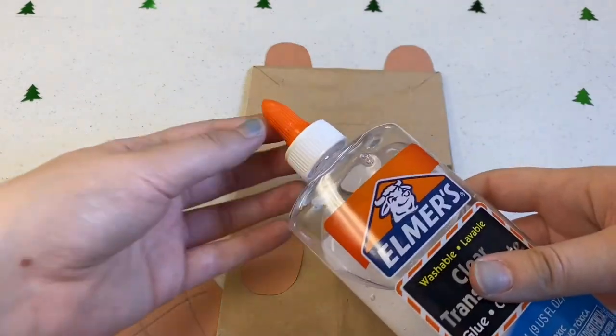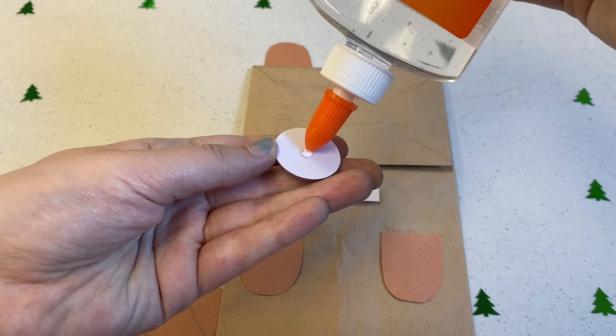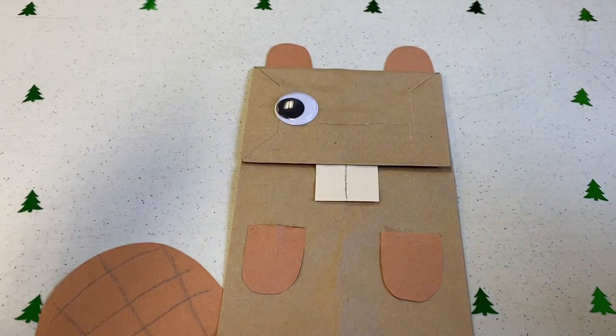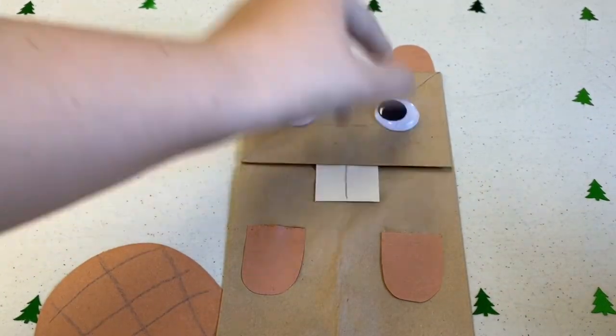Now, we'll be giving our beaver their eyes. These googly eyes are pretty big, but you won't need too much glue for them to stick. We'll be sticking these to the top of the flap like so. This is where a beaver's face will be.